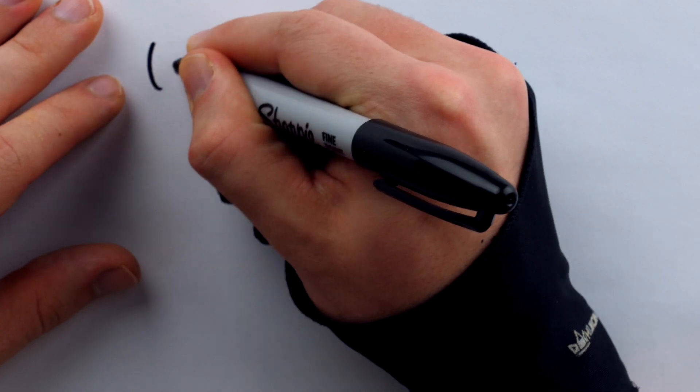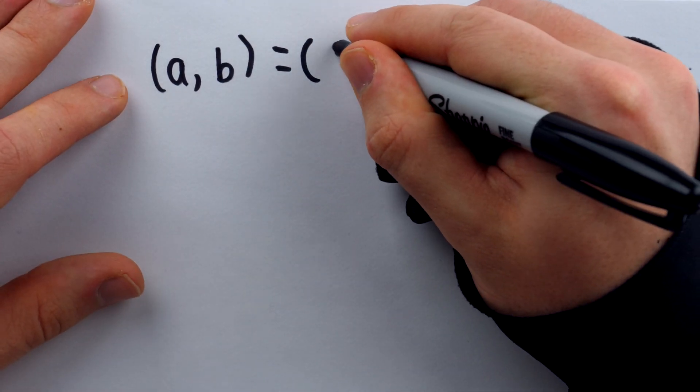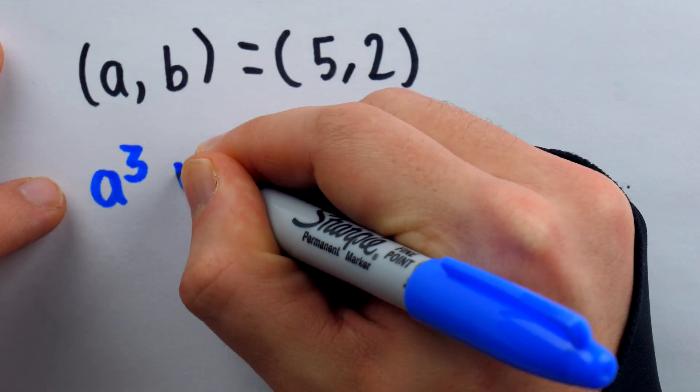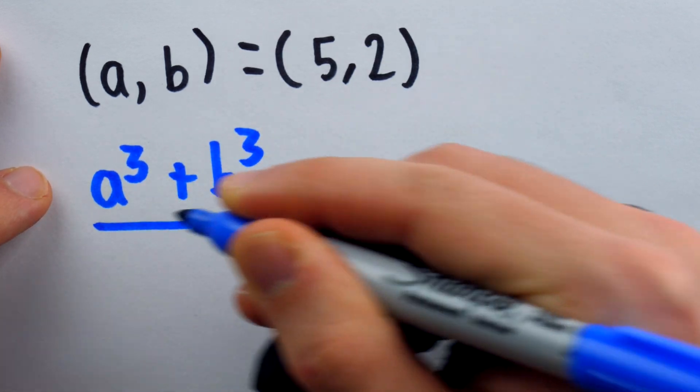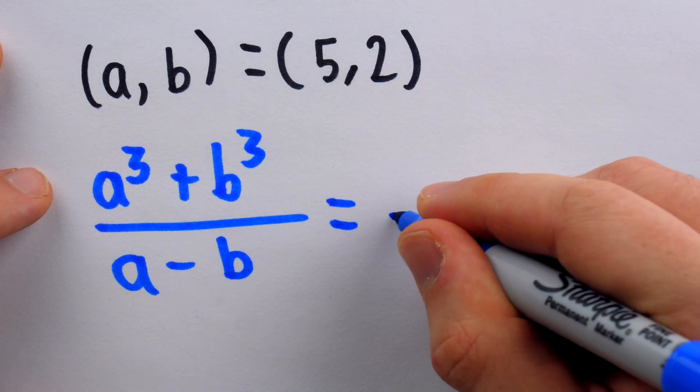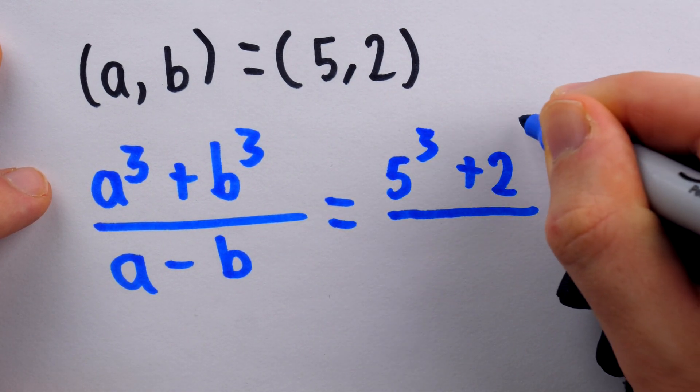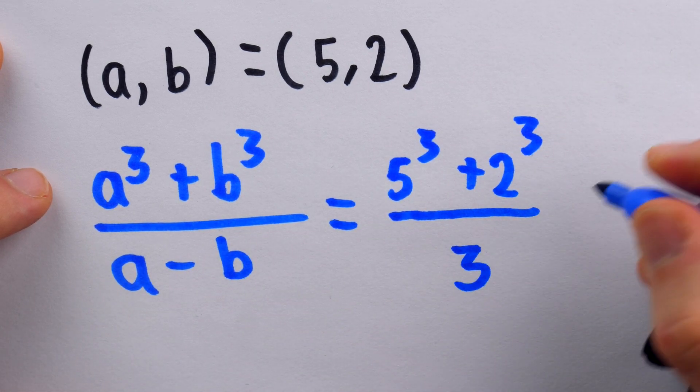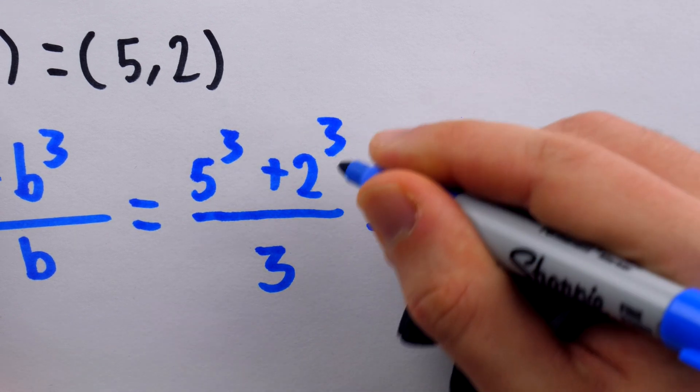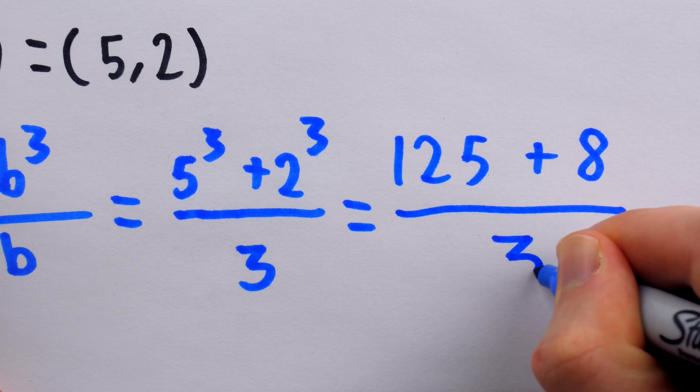Let's say that we plug in a equals five and b equals two. So this is our ordered integer pair. Then what does the expression evaluate to? Well, it's a³ + b³ divided by a - b. So based on plugging this in, what we get is 5³ + 2³ divided by 5 - 2. So let's just put a three down there. 5³, of course, is 125 and 2³ is eight. So 125 plus eight divided by three.